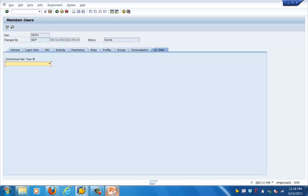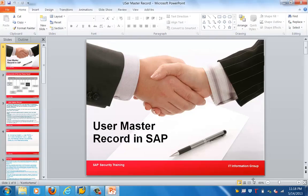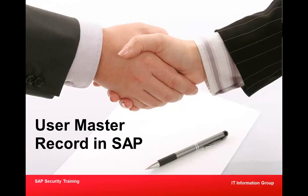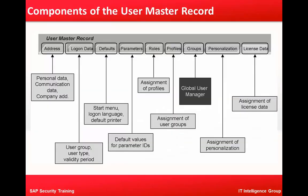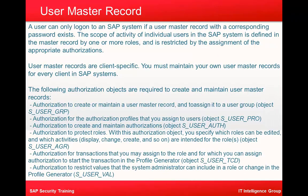We should make sure that this information is complete and populated. Let's look at the theoretical aspect. Here you can see the address — personal data, communication data, company address. Next is logon data: user group, user type, validity period. Then defaults: the menu, logon language, the printer. Then parameters — default values for parameter IDs. Then roles — assignment of profiles. Profiles is assignment of user group, groups, global user manager. And personalization is assignment of personalization.